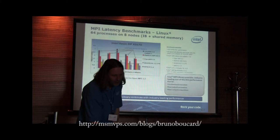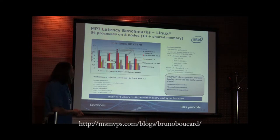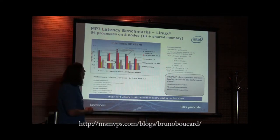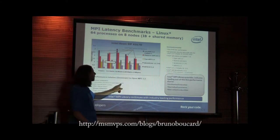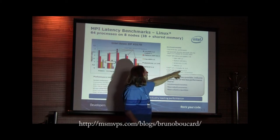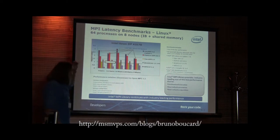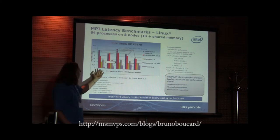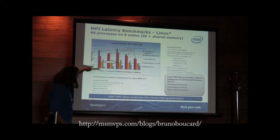Moving on to a couple of benchmarks. A claim made a couple of minutes ago was that Intel MPI is very fast — here's the proof. This is running on Westmere systems with InfiniBand and QDR adapters using Composer XE, compiler version 12, and the Intel MPI benchmarks — a piece of source code that does sends and receives, broadcasts, and produces results for small, medium, and large messages.